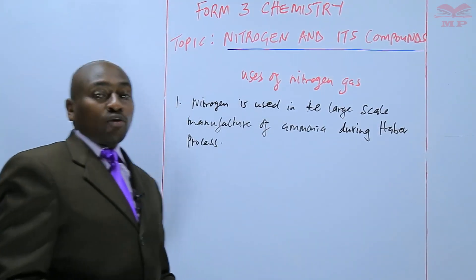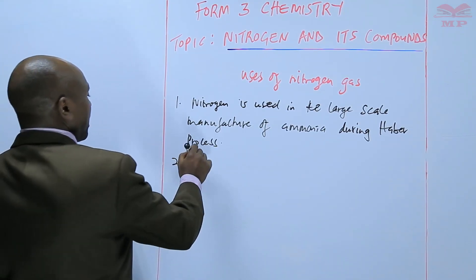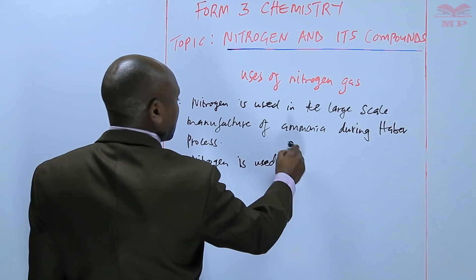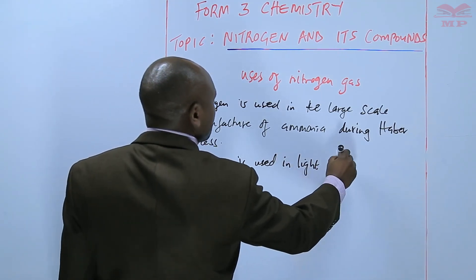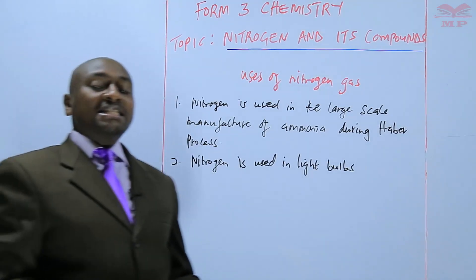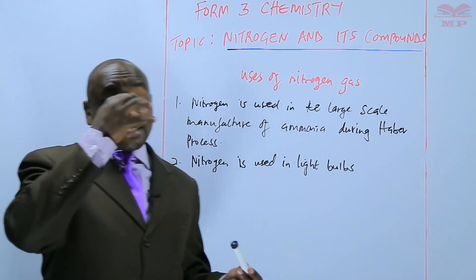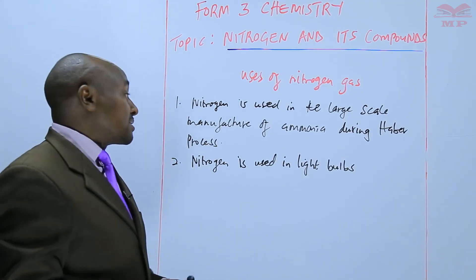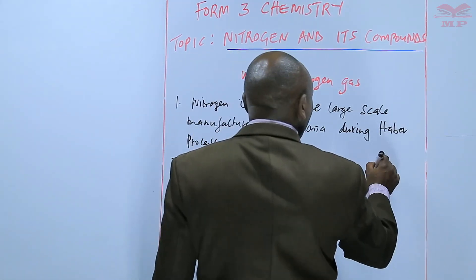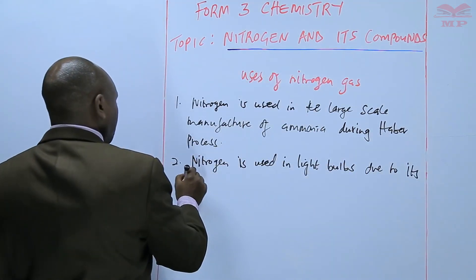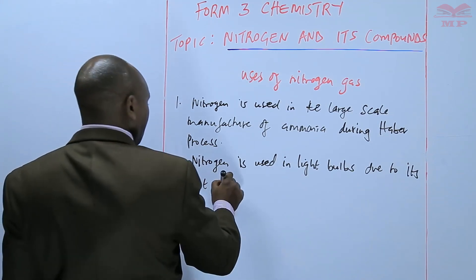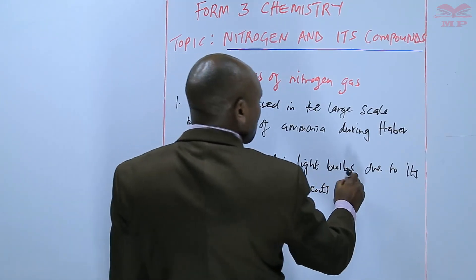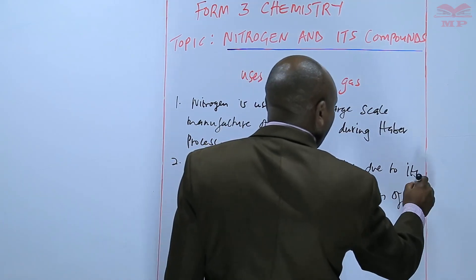Nitrogen is used as one of the raw materials. Second, nitrogen is used in light bulbs — the bulbs that we commonly use — due to its inert nature. It is inert; it doesn't oxidize the filaments of the bulb. Because of the inert nature of nitrogen gas, it is used in light bulbs, as it prevents oxidation of the filament.